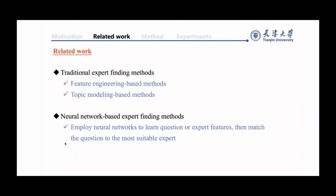Expert finding plays a crucial role in CQA websites and many expert finding methods have been proposed. The most popular approaches can be categorized as either traditional methods or neural network-based methods. Traditional expert finding methods mainly contain feature engineering-based methods and topic modeling-based methods. Neural network-based methods employ neural networks to learn questions or expert features, then match the question to the most suitable expert.